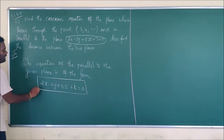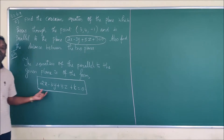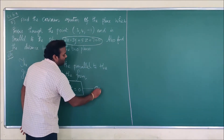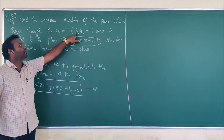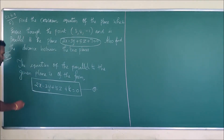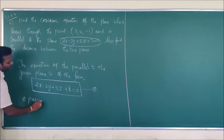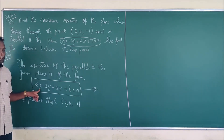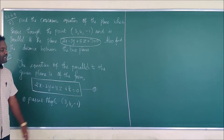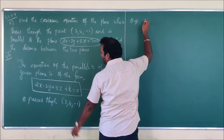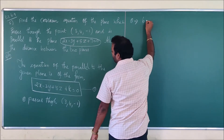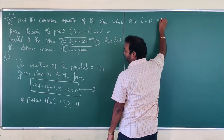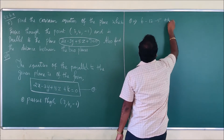This is the equation of the plane — let us call it equation 1. Next, we have to find the value of k. This equation passes through the point (3, 4, -1), so we substitute x as 3, y as 4, and z as -1. Substituting into equation 1: 2 into 3 is 6, minus 3 into 4 is 12, then 5 into -1 is -5, plus k equals 0.